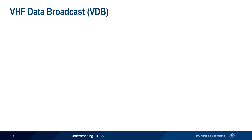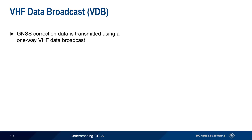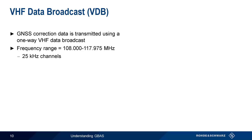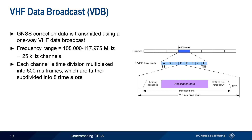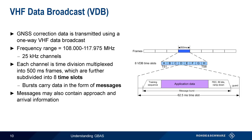A key part of GBAS is the VDB, or VHF data broadcast. GNSS correction data and airport facility data are transmitted from the ground subsystem to the airborne subsystem using a one-way VHF data broadcast. The frequency range for these broadcasts is 108 to 117.975 MHz, divided into 25 kHz channels. Each channel is time division multiplexed into 500 ms frames, and each frame is further subdivided into eight time slots. GBAS information is encoded into different types of messages sent as a burst within each time slot, and these messages may also contain information for pilots regarding approach and arrival procedures.